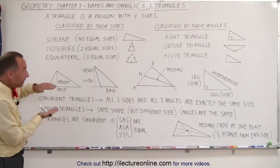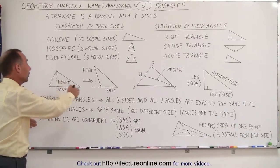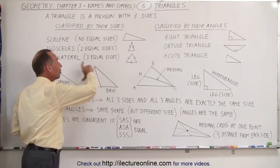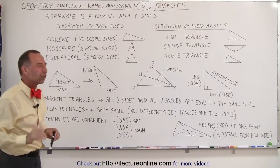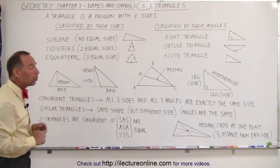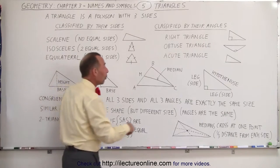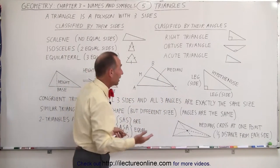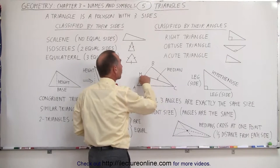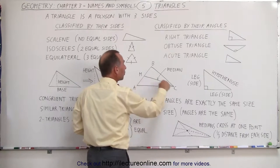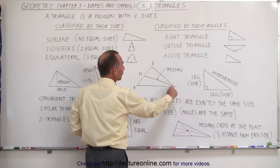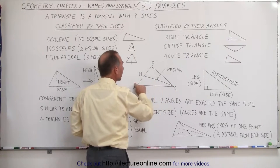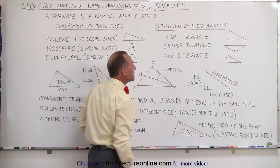We can actually take that triangle, turn it over, and draw it differently — then another side becomes the base and the corresponding perpendicular distance becomes the height. We can also draw a line from one of the three vertices to a point on the side opposite that vertex.